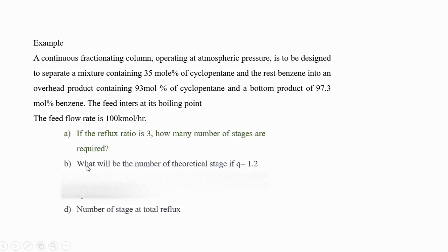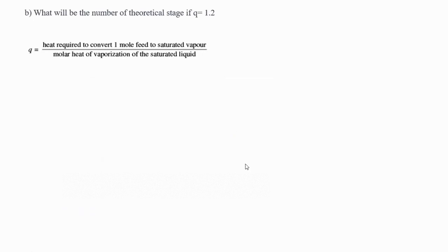The second question asks: what will be the number of theoretical stages if the Q value is 1.2? Q represents the feed line or the feed characteristics. Q is, in general, the heat required to convert one mole of feed to saturated vapor divided by the molar heat of vaporization of the saturated liquid.